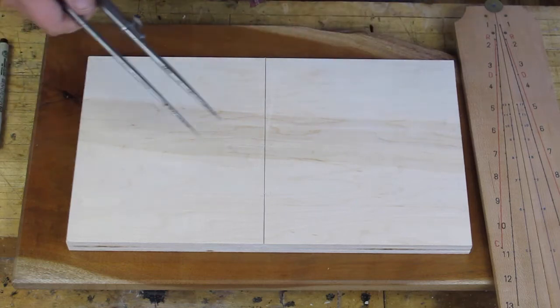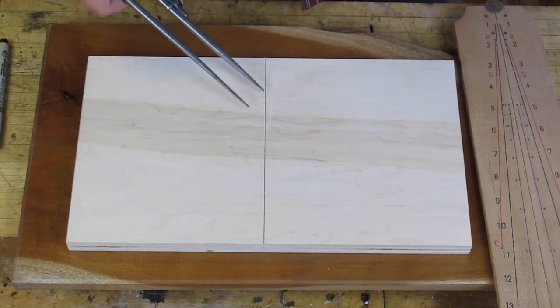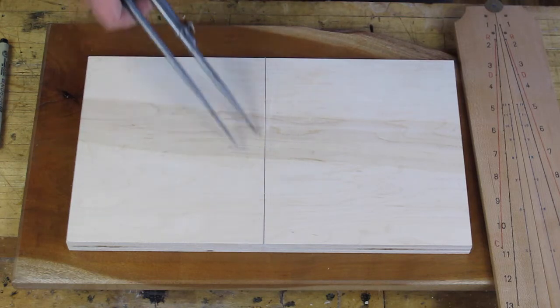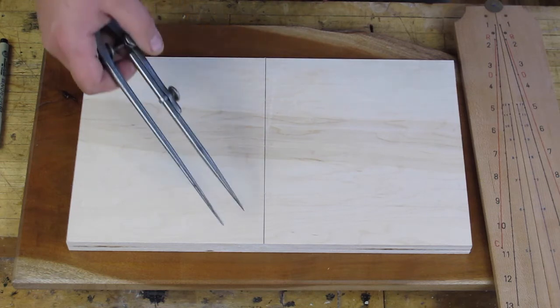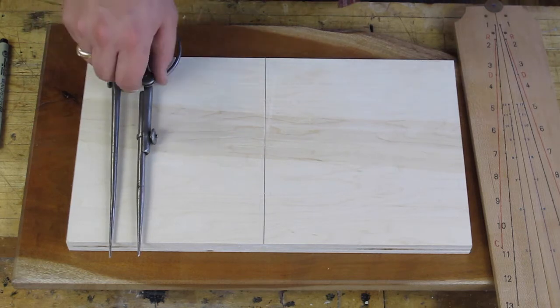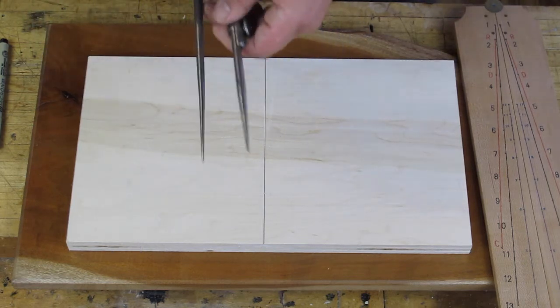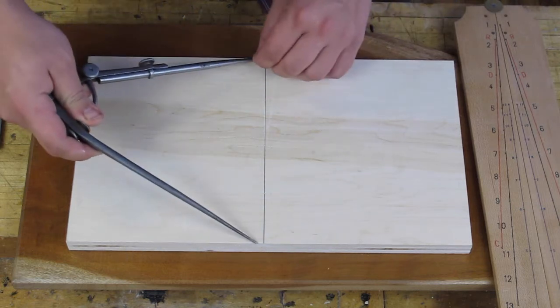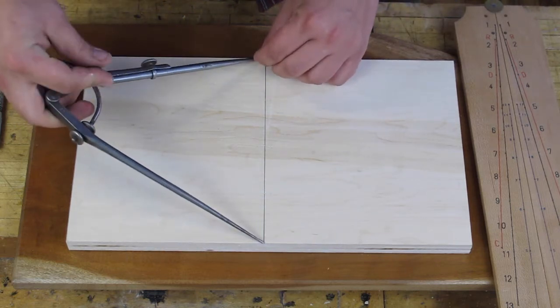So now I've got a nice square line there on my board. And I want to divide this board into fourths. So that may be because I want to locate a drawer pull at one quarter the distance from the top, maybe because I want to cut this board into fourths or I'm laying out banding, so on and so forth.